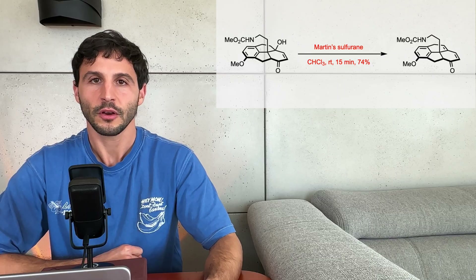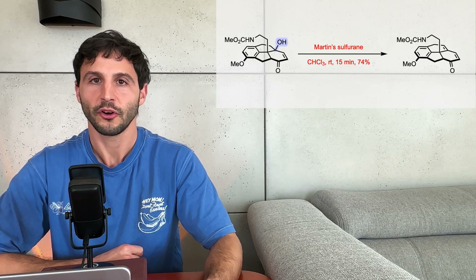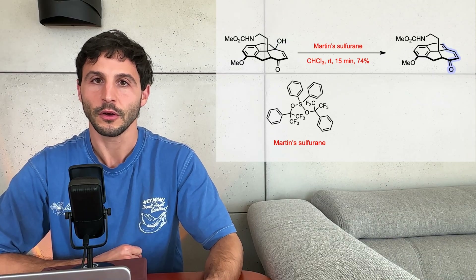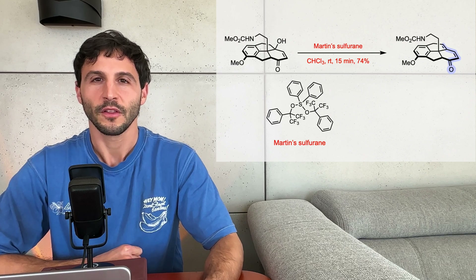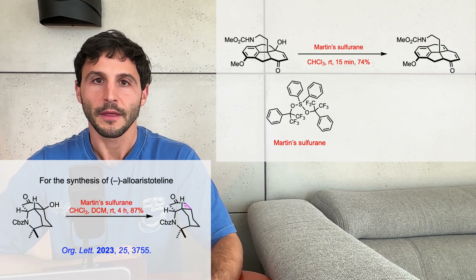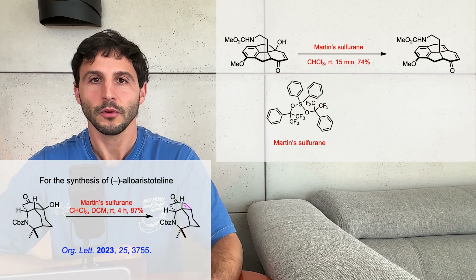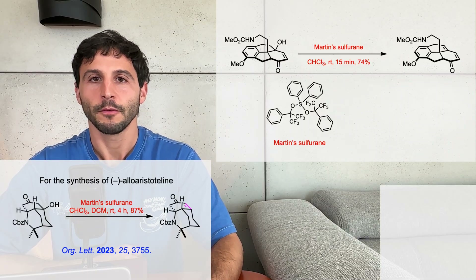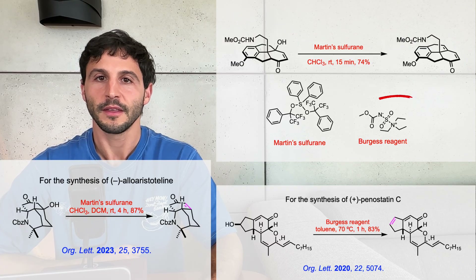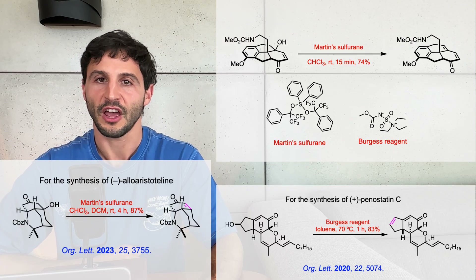Next, elimination of the tertiary hydroxy group using Martin's sulfurane gives the dienone. Martin's sulfurane is a versatile and commonly used dehydrating agent, effective under mild conditions and compatible with a range of functional groups. Another powerful reagent for the dehydration of secondary and tertiary alcohols is the Burgess reagent.